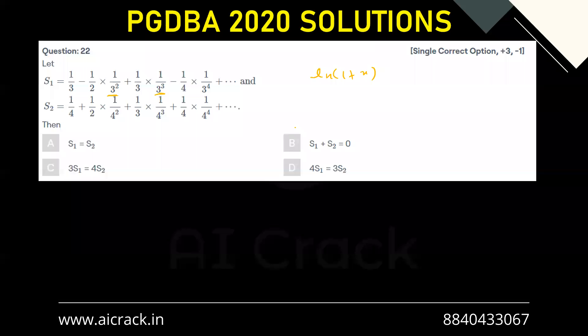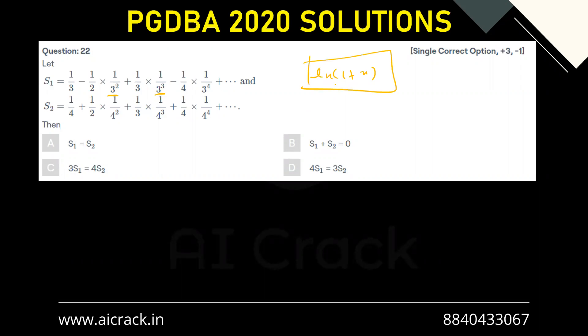So if we write ln(1+x), that is x - x²/2 + x³/3 - x⁴/4 and so on.